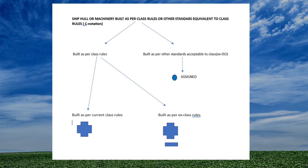Also, at the request of the owners it may happen that the hull of the ship is built as per class rules but the machinery fitted follows some other alternative standards. In this case the ship will be assigned the notation 'hull cross and machinery dot.' In another example, if both the hull and the machinery are built as per class rules, then a single cross is assigned universally. Alternatively, if both are built as per alternative standards, the symbol dot is assigned universally.